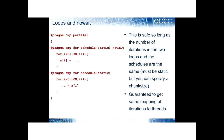In that case, as soon as a thread has finished its set of iterations in the first loop, it will carry straight on and start executing the second loop, even if other threads haven't finished the first one.